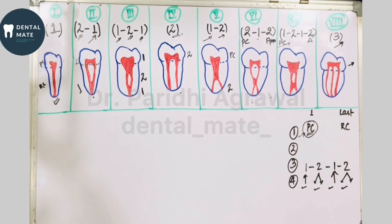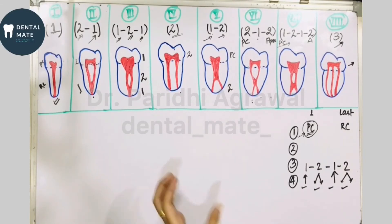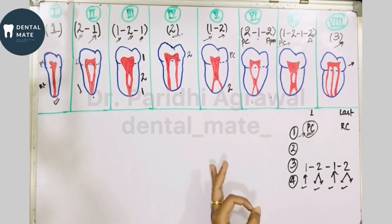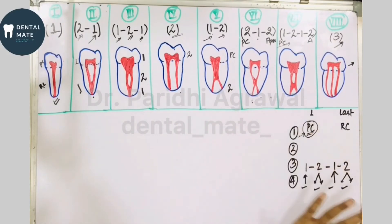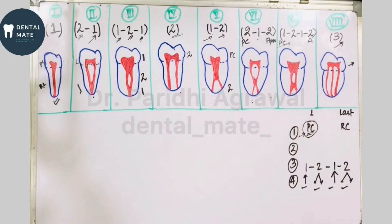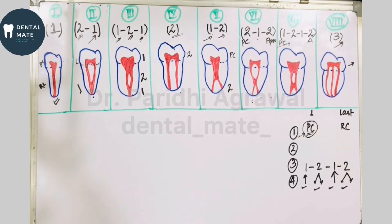Always remember in Vertucci's classification: even if it is a single digit number, the first number denotes the number of canals at the pulp chamber and the last number always denotes the number of canals at the apex. With this trick you can easily classify and describe each type.